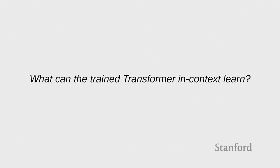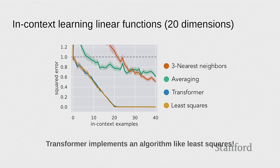So what can this trained transformer do? Let's start with linear functions in 20 dimensions. This plot shows, as you increase the number of in-context examples, what is the error rate on a fresh draw. We're looking at least squares here — and this is what you would expect. There's no noise in the problem, the dimensionality is 20, which means that if you get 20 points you basically know the function and least squares is optimal. You can't do better than that. And here the transformer is actually able to match the implementation of least squares. We also check some naive things like averaging and nearest neighbors, and these just don't work.